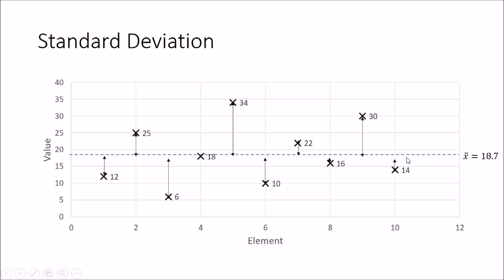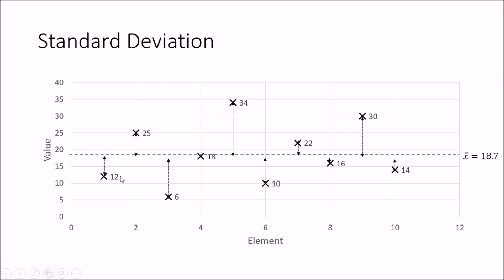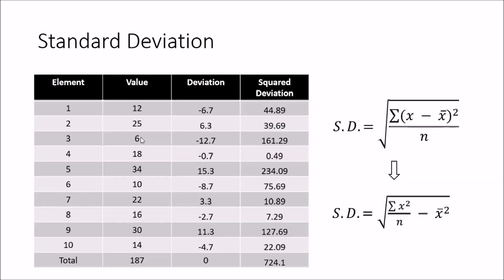So next let's see how to calculate the standard deviation from this data. I have put the values into a table: the first data value is 12, the second is 25, the third is 6, and so on. The first value is deviated from the mean by 6.7, and the second by 6.3. Note that this deviation is negative because 18.7 is greater than 12, while the second deviation is positive as 25 is greater than 18.7.